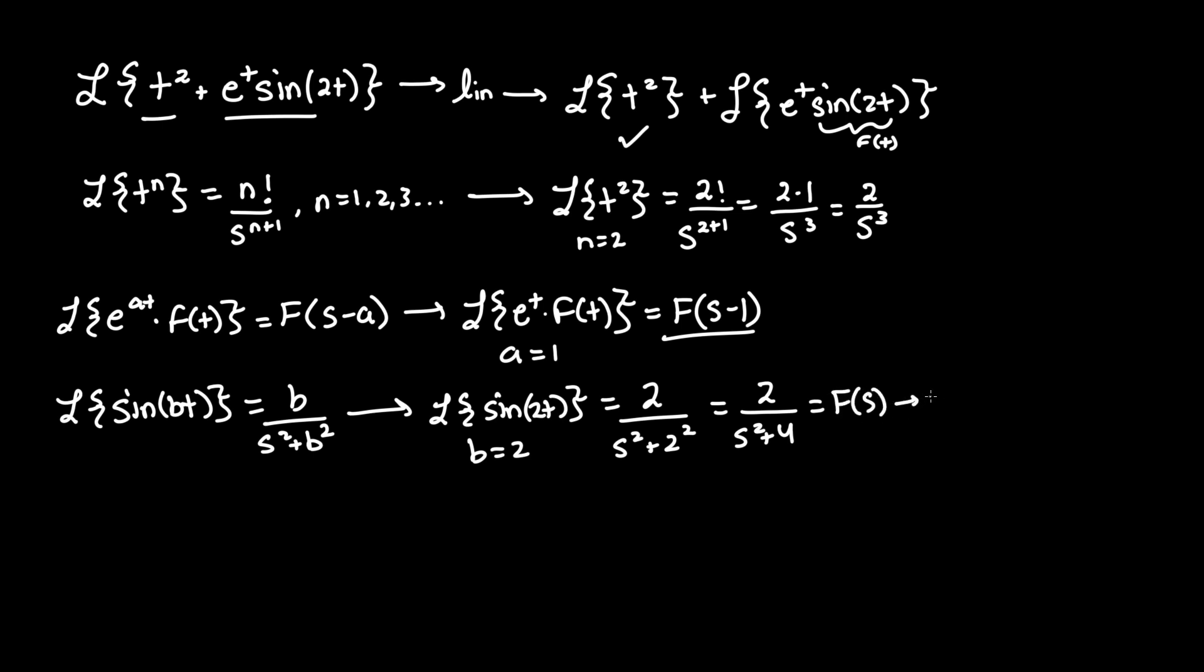Now let's convert it into our F of s minus a, or F of s minus 1. That means we take every s term and simply subtract it by 1. So this is a pretty straightforward case. It just becomes 2 over parentheses s minus 1 quantity squared. Anywhere there's s, turn it to s minus 1.